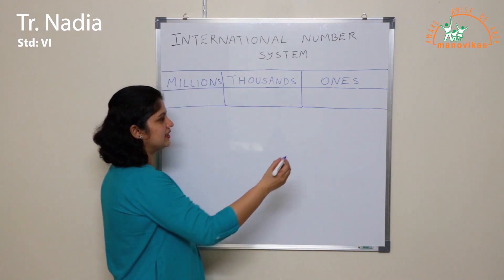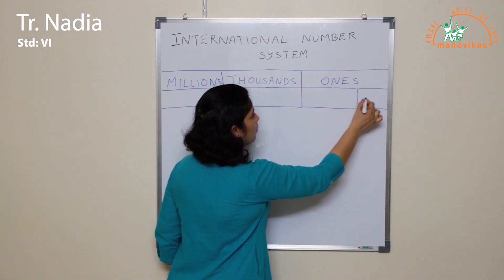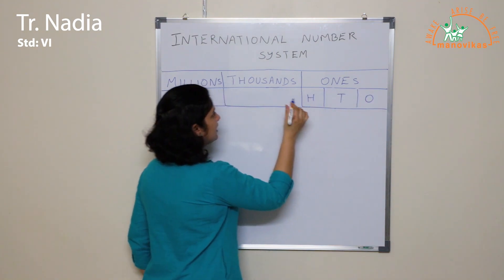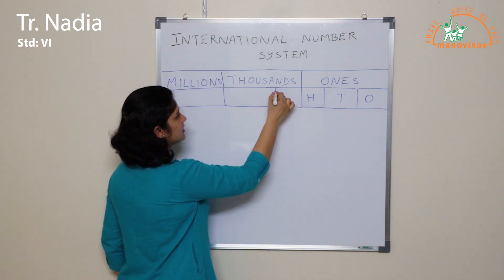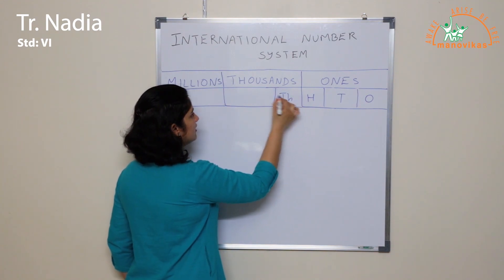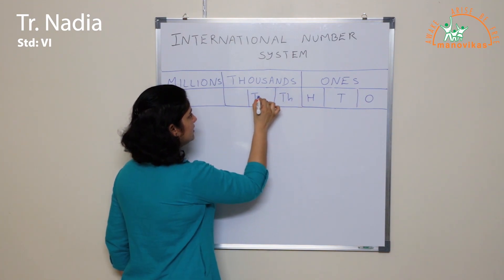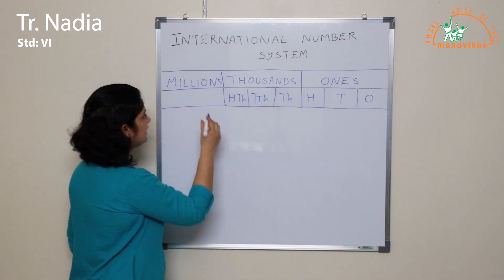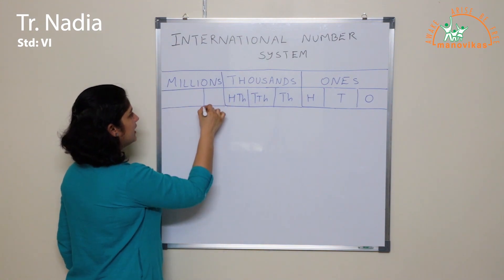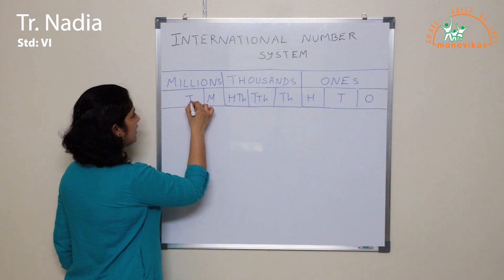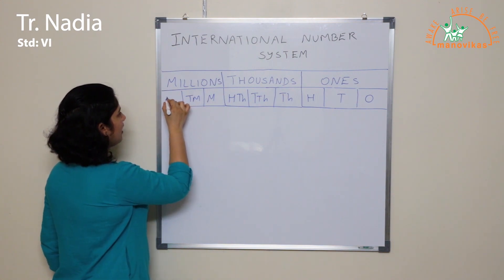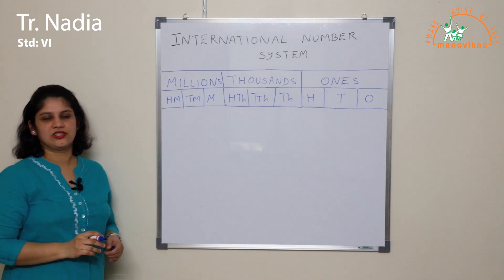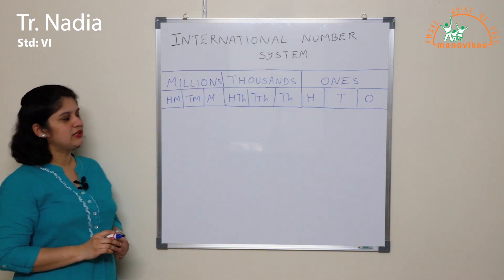The Ones period is further divided into Ones, Tens, and Hundreds. The Thousands period is divided into Thousand, Ten Thousand, and Hundred Thousand. And the Millions period is further divided into Millions, Ten Millions, and Hundred Millions. So this is how the International Number System looks.